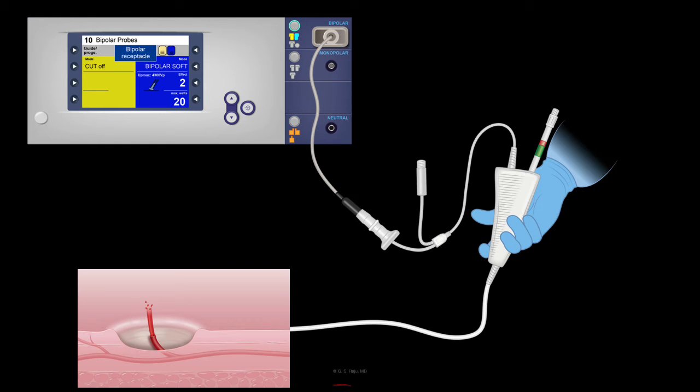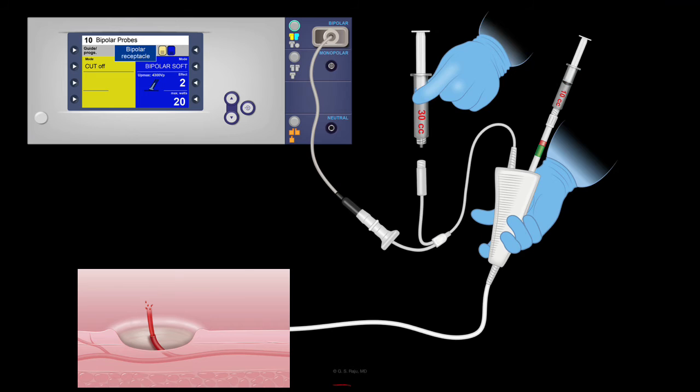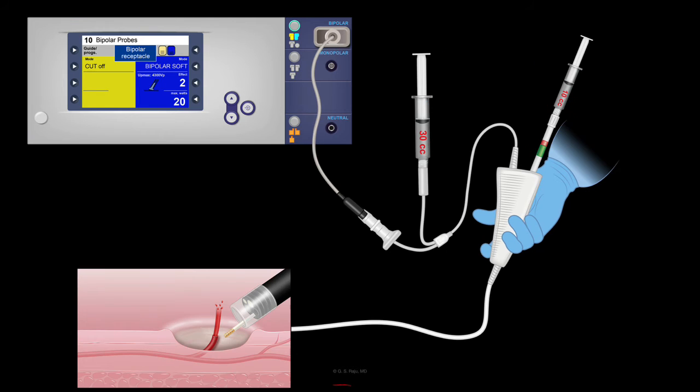But before we go there, let me share with you some of the other things that you could do with this bipolar device. You could inject epinephrine or flush saline to clear the blood. This bipolar device can come on its own or with a needle as you've seen here. The needle can be used to inject epinephrine to create vasospasm and slowing of the blood flow before the probe can be used for coaptive coagulation and arresting the bleeding.